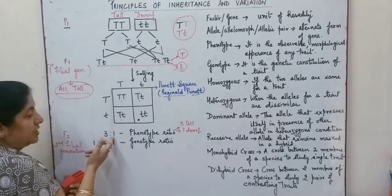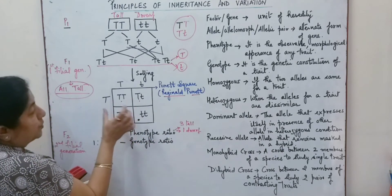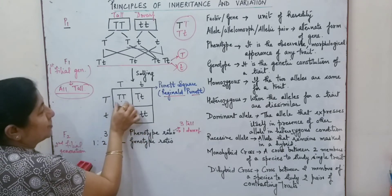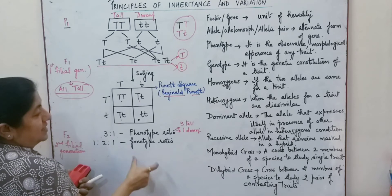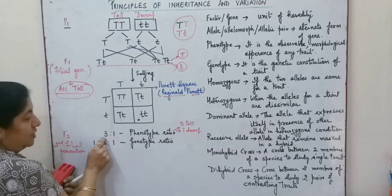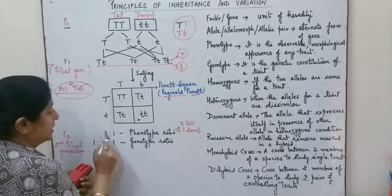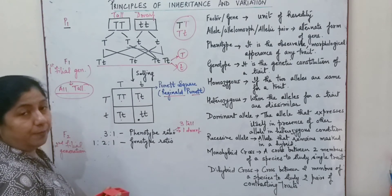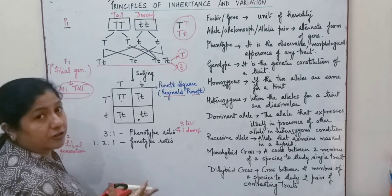When we say 3:1 is the phenotype ratio, that refers to what we observe in a plant. When we look at the plant, we find three tall plants and one dwarf in the F2 generation. Phenotype ratio means the morphological appearance — 3 is for tall and 1 is for dwarf, giving us a 3:1 phenotype ratio.